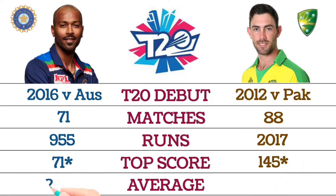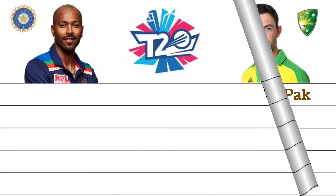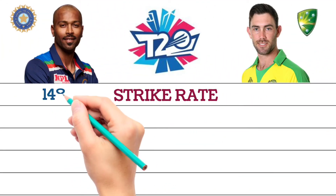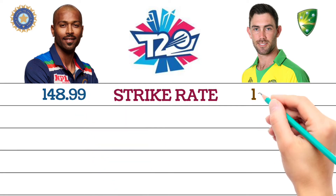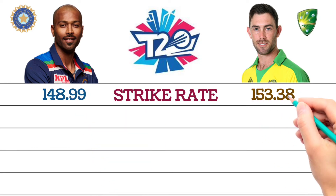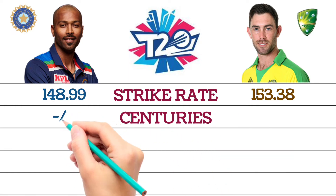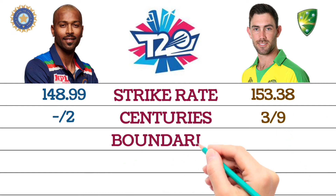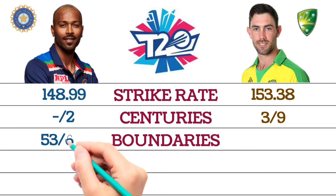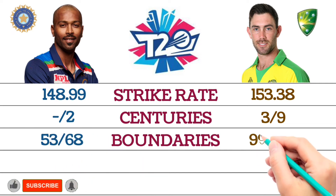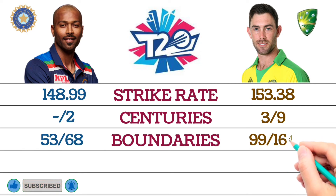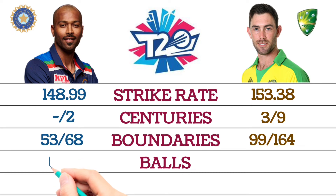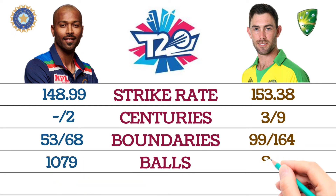Batting average: Hardik Pandya 25.13; Glenn Maxwell 30.56. Strike rate: Hardik Pandya 148.99; Glenn Maxwell 153.38. Centuries: Hardik Pandya 0 centuries and 2 half-centuries; Glenn Maxwell 3 centuries and 9 half-centuries. Boundaries: Hardik Pandya 53 sixes and 68 fours; Glenn Maxwell 99 sixes and 164 fours. Total balls bowled: Hardik Pandya bowled 1079 balls; Glenn Maxwell bowled 810 balls.